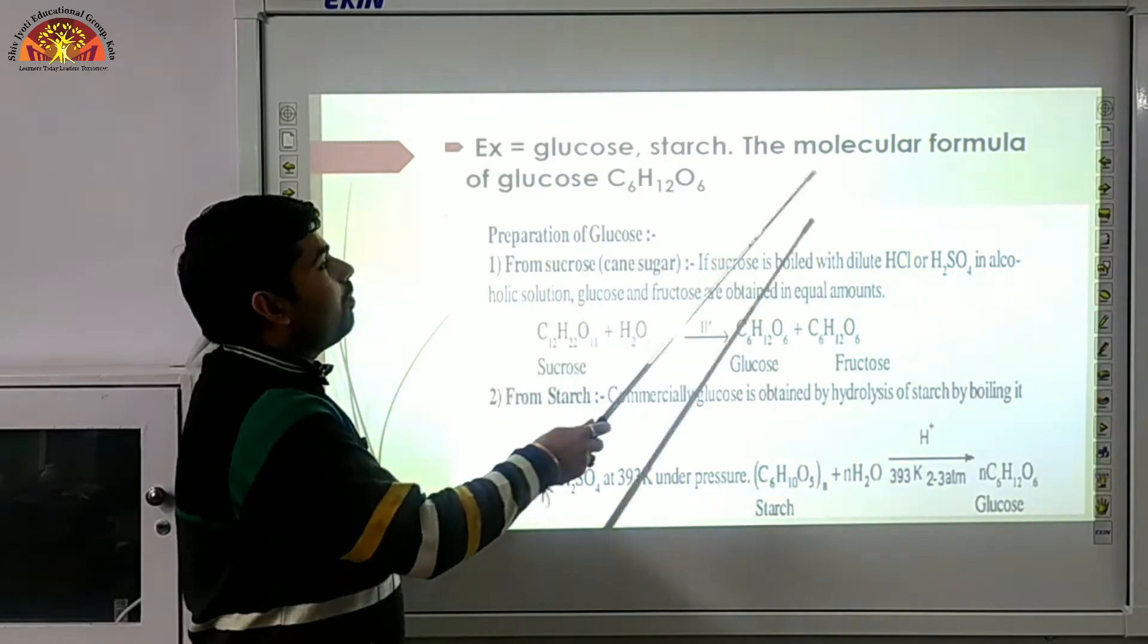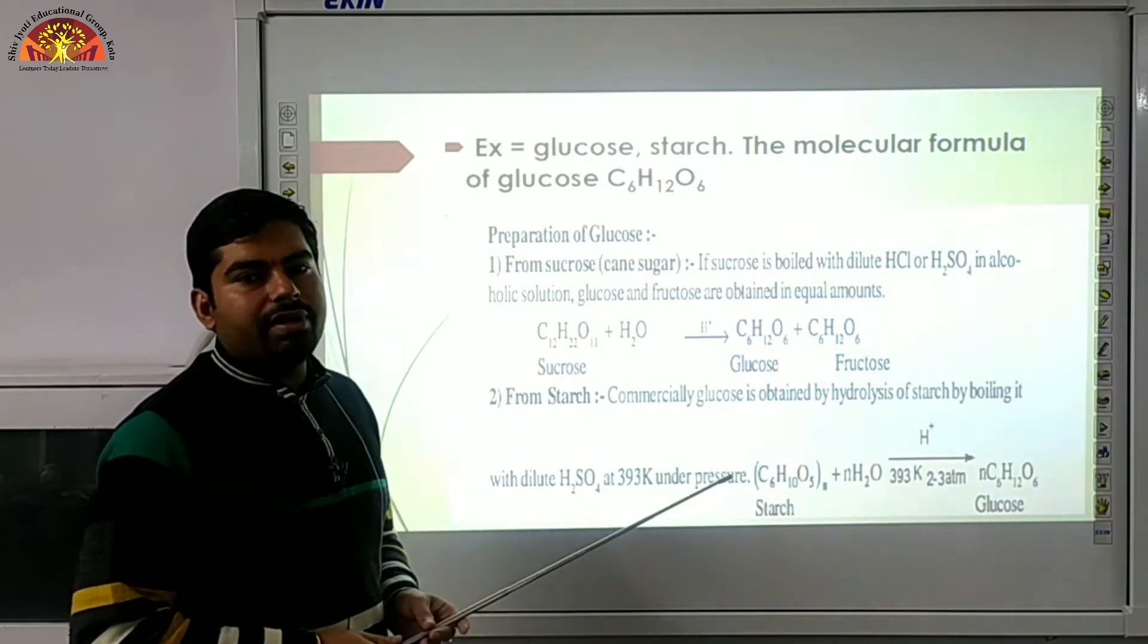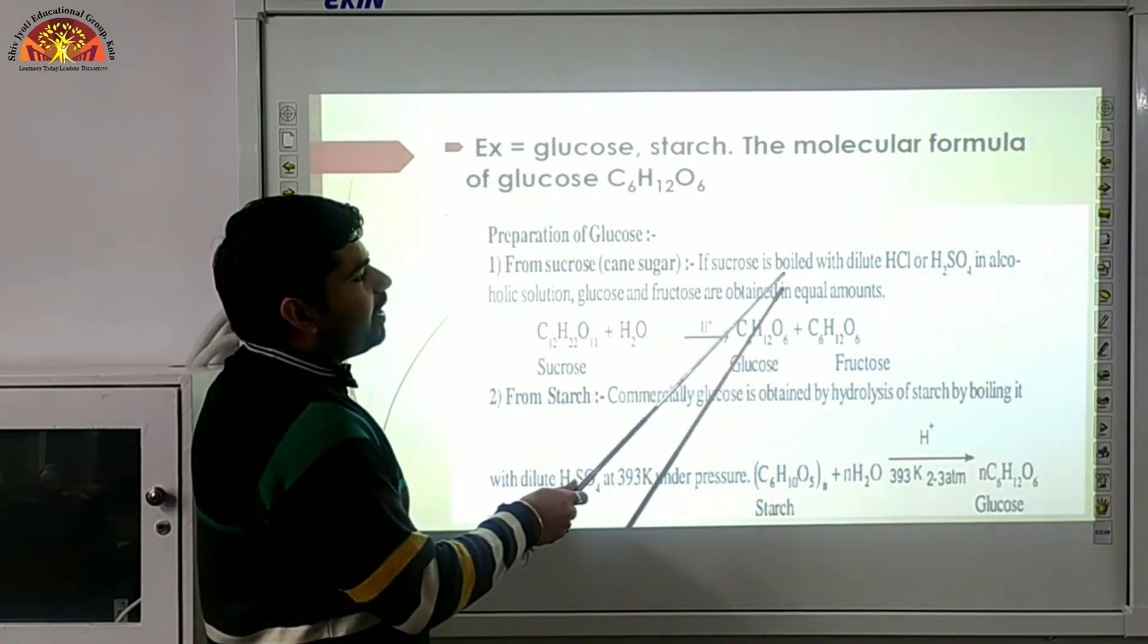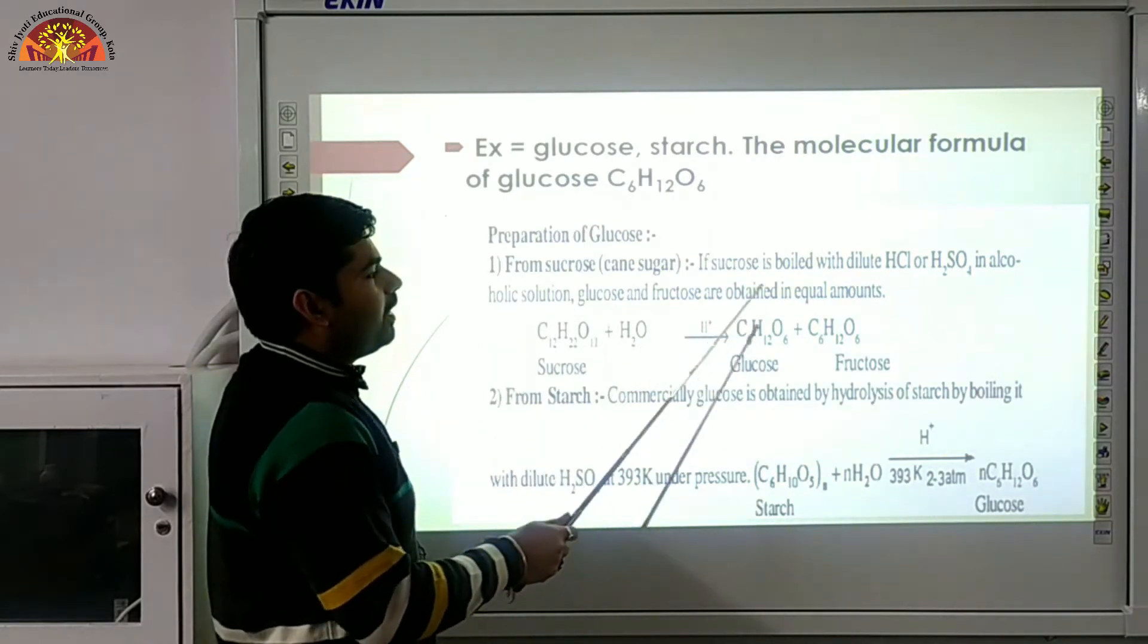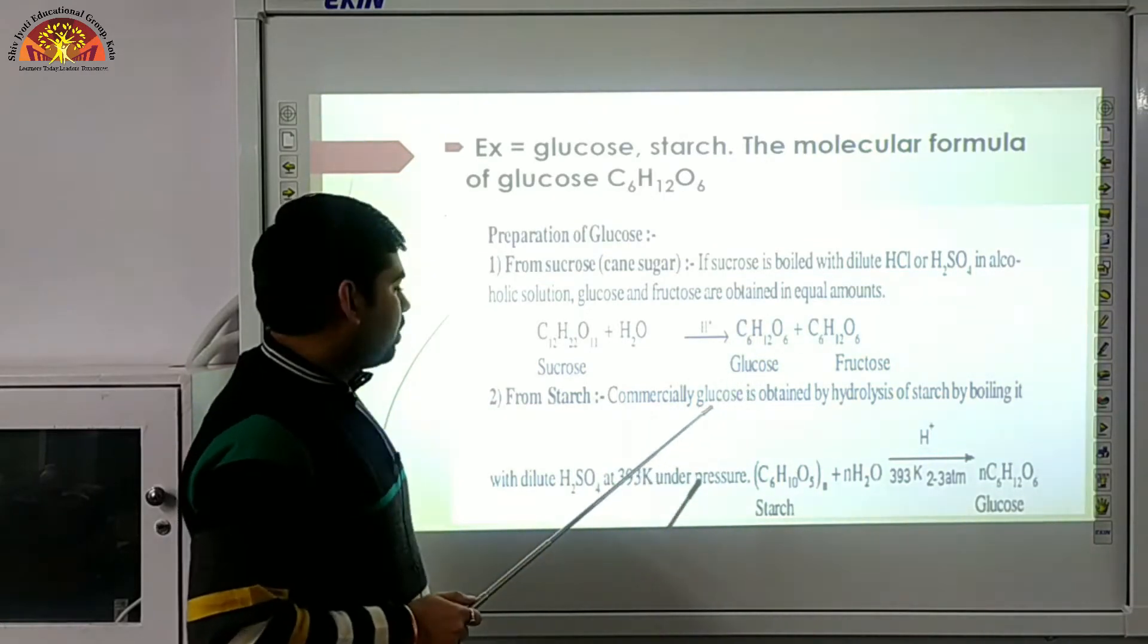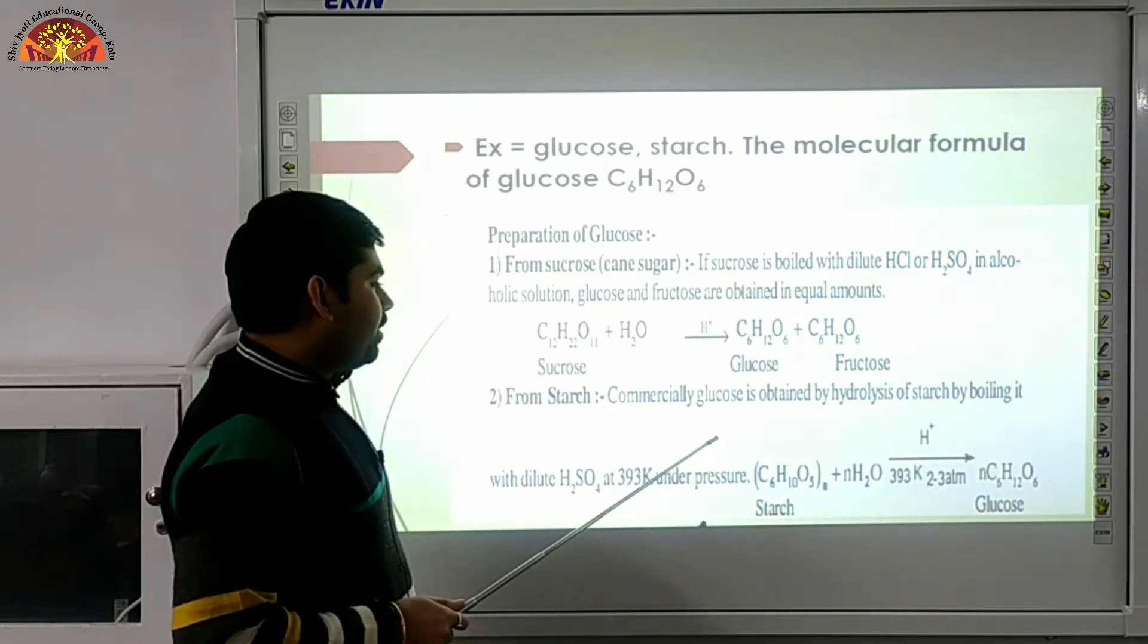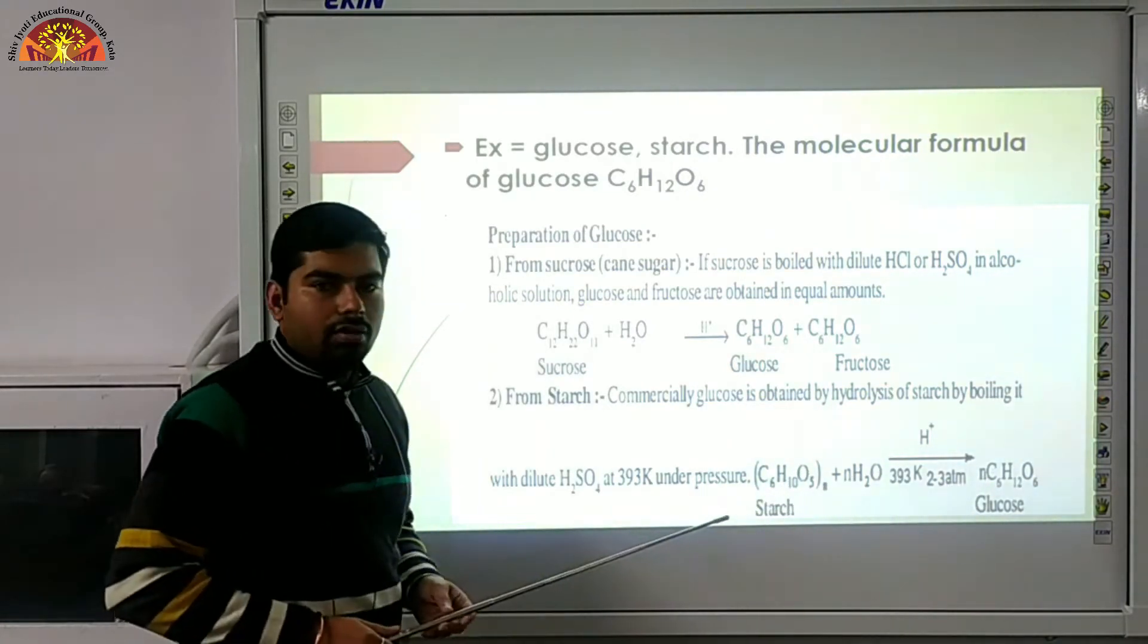They have the general formula CX H2O Y and they are hydrates of carbon. Example glucose, starch. The molecular formula of glucose is C6 H12 O6, which is called dextrose. Preparation of glucose from sucrose, cane sugar. If sucrose is boiled with dilute HCl and H2SO4 in alcoholic solution, glucose and fructose are obtained in equal amounts. From starch, commercially glucose is obtained by the hydrolysis of starch by boiling it.